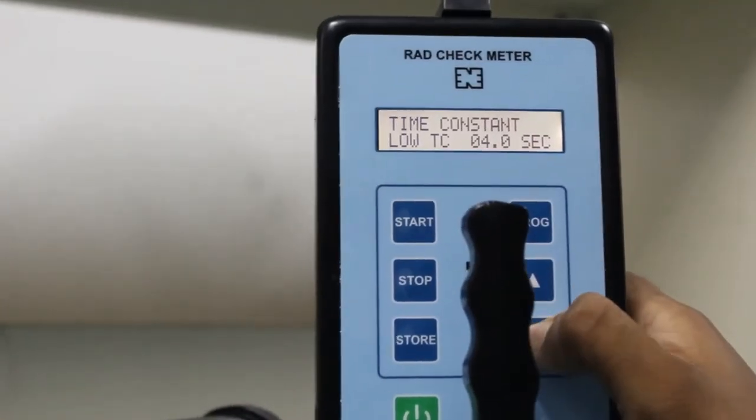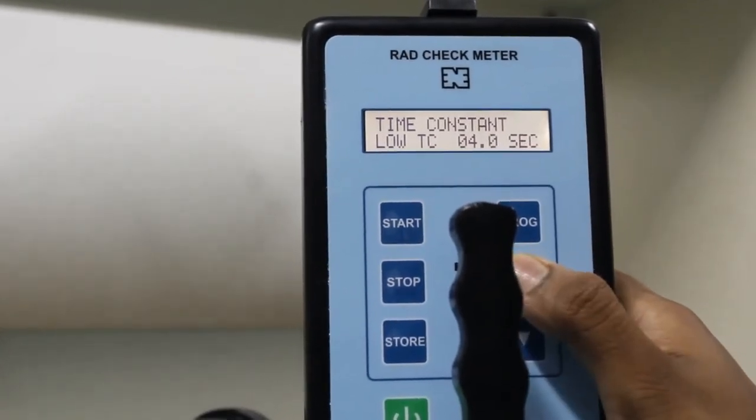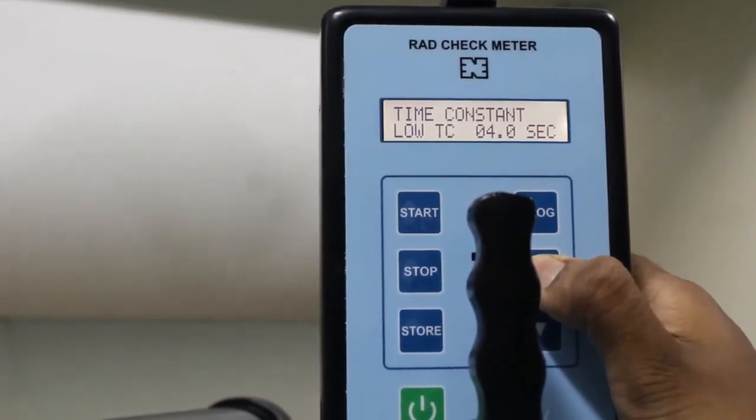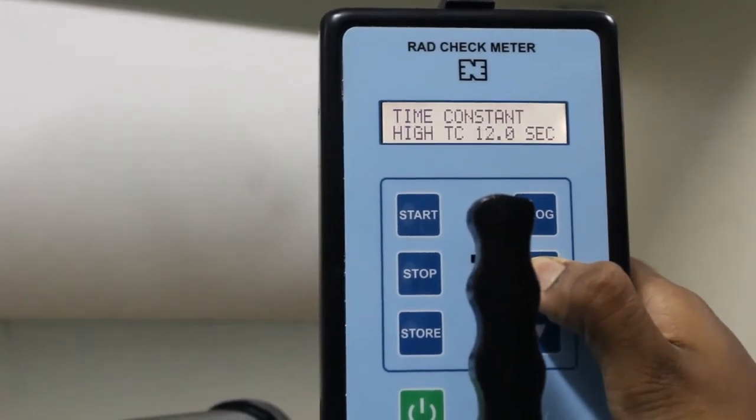Time constant. It is used for how many seconds the machine starts detecting samples. We can set to 4 seconds, 8 seconds, or 12 seconds.